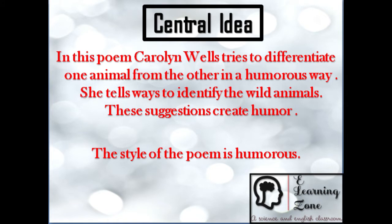In the poem, Carolyn Wells tries to differentiate one animal of prey — like lion, tiger, and leopard — from the other in a humorous way. She tells many ways to identify these wild animals. The suggested ways create humor. The theme revolves around dangerous ways to identify wild animals, but treated in a humorous way. The style of the poem is humorous, and Carolyn Wells takes liberties with the language to create a poetic effect.